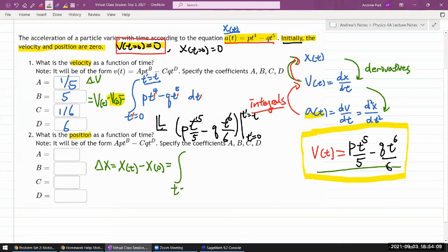Integrated from t prime is equal to zero to t prime is equal to t. So the integral should be p fifth, t to the five minus q sixth, t to the six with respect to t. Let me write that out.